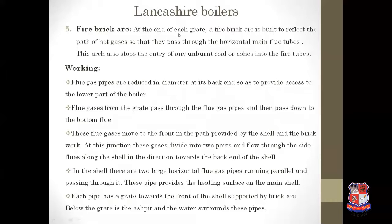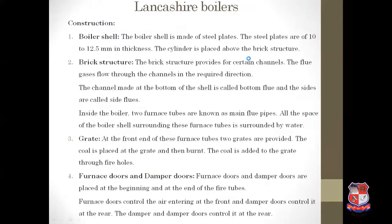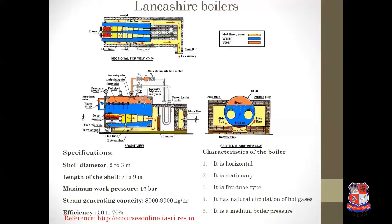A fire brick arch is built at the end of each grate to reflect the path of hot gases, so they pass through the horizontal main flue tube. This arch also stops the entry of unburned coal or ash into the fire tubes.